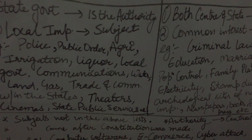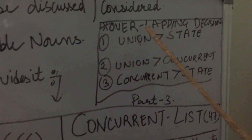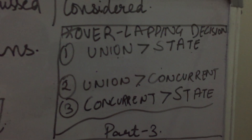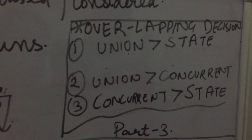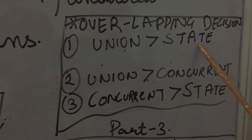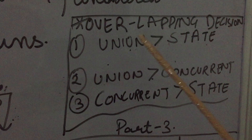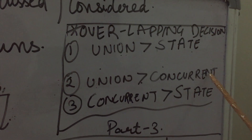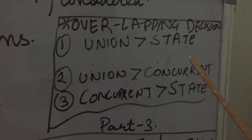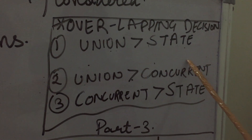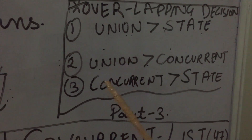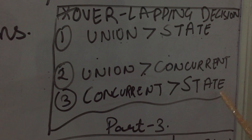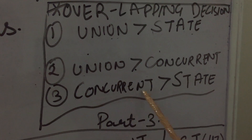Now, one very important point to look at carefully: if there is an overlapping — conflict — in the decision, for example, union list aur state list ke beech mein vivaad hai, toh kiski decision mani jayegi? Union ka. Agar union list aur concurrent list ke andar overlapping decision hai, toh kiski decision higher rahegi? Union ka. Aur agar concurrent list aur state list mein conflict hai, toh kiski decision mani jayegi? Hamare concurrent list ka.